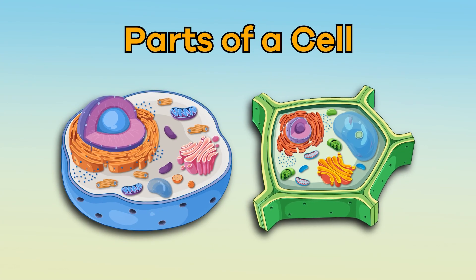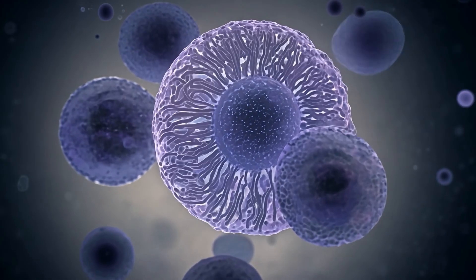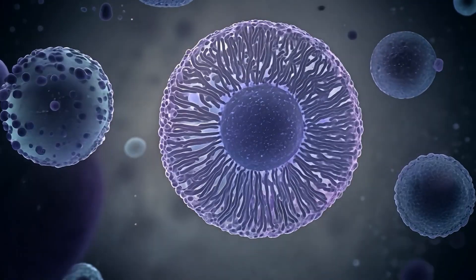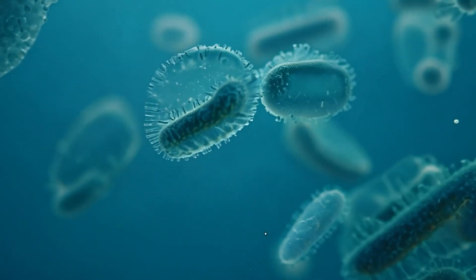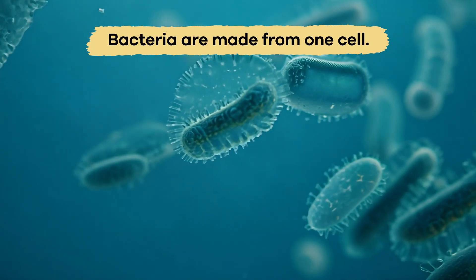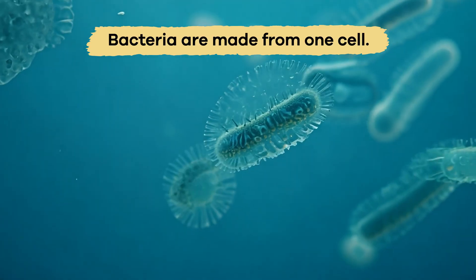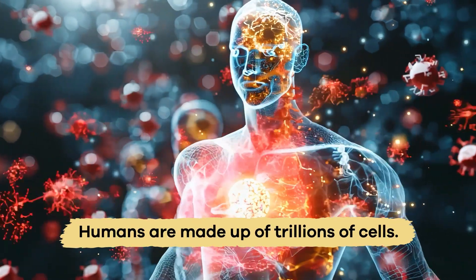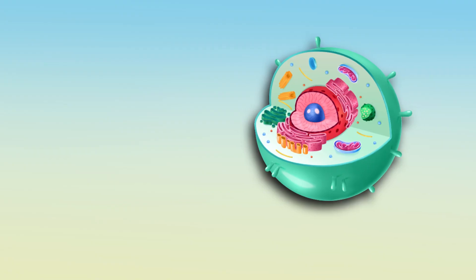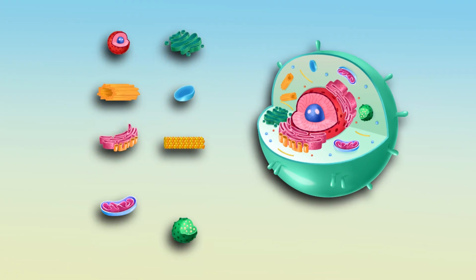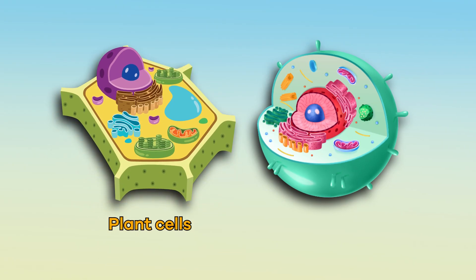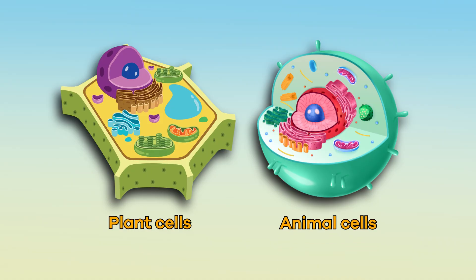Parts of a Cell. Cells are the basic unit of life. Some organisms, like bacteria, are made from one cell, while others, like humans, are made up of trillions. Today, we are going to talk about the parts of a cell and the difference between plant cells and animal cells.